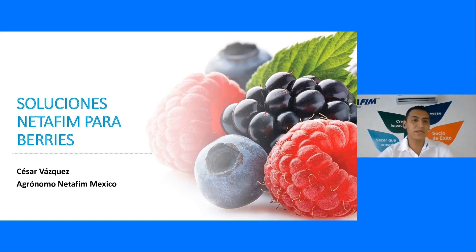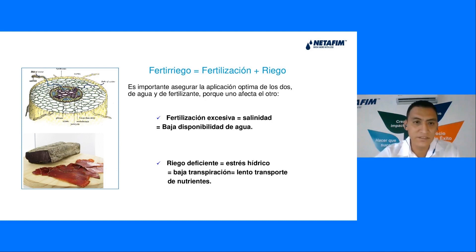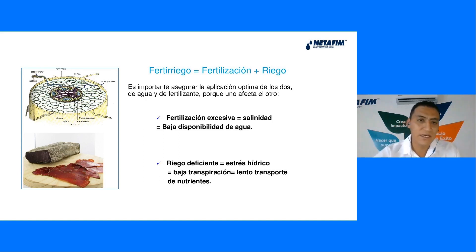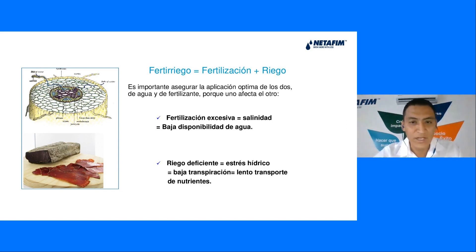El día de hoy vamos a ver el tema de soluciones Netafim para el cultivo de los berries. Para saber qué soluciones hay que dar, es importante saber qué es el fertiriego. Nosotros lo definimos como la fertilización más el riego — el conjunto de las dos cosas. Es importante asegurar la aplicación óptima del agua y del fertilizante, porque uno afecta al otro. Un riego excesivo provoca salinidad y baja disponibilidad de agua, mientras que un riego deficiente provoca estrés hídrico, baja transpiración y lento transporte de nutrientes.